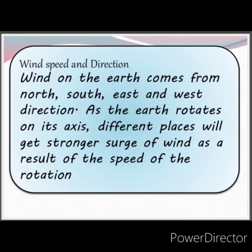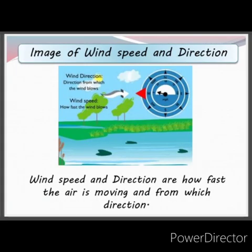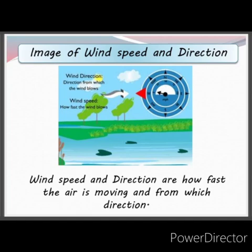Wind Speed and Direction. Wind on the Earth comes from the North, South, East, and West directions as the Earth rotates on its axis. Different places will get a stronger surge of wind as a result of the speed of rotation. Wind speed and direction describe how fast the air is moving and from which direction, as shown in the picture.